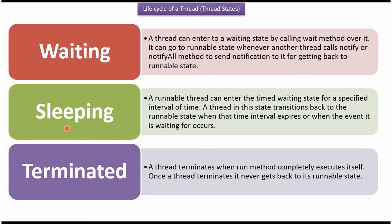When the sleep method is called on the thread, the thread will go to sleep state for a specified time interval. Once the specified time interval is over, it will go back to runnable state. When the run method exits, the thread goes to terminated state. Once the thread is terminated, it never gets back to runnable state.